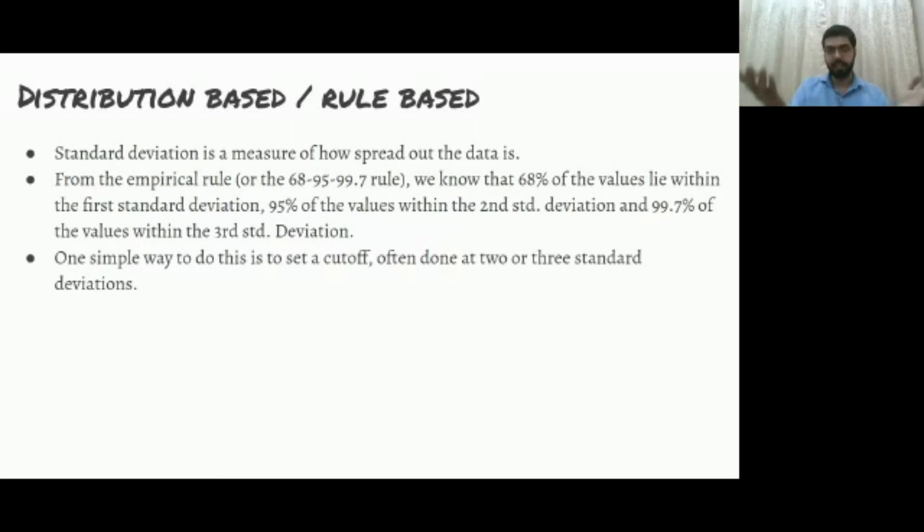One very simple, and that's why it's called rule-based, way is to set a cutoff, often done at two or three standard deviations. You're going to say any data point that comes after two standard deviations or after three standard deviations is an outlier for me, and this is actually decided by you.